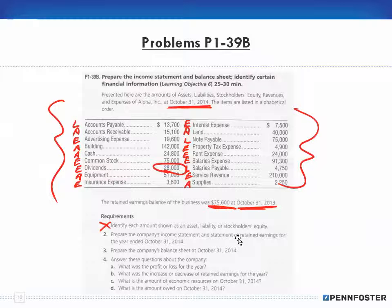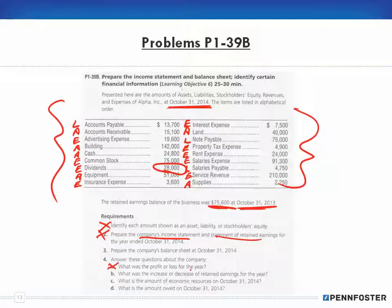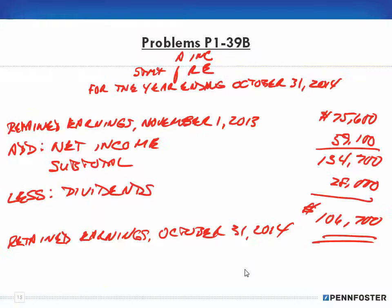Going back to the homework problem data: we've actually done number two because we created the income statement and the statement of retained earnings. When we did the income statement we answered what was our profit or loss for the year — that was $59,100. Now it asks what was the increase or decrease in retained earnings for the year. The increase or decrease is the difference between our beginning and end.